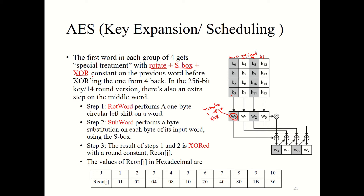In the first round you XOR with 1, in the second round with 2, the third round with 4, until the tenth round where you XOR with 36, and in the ninth round you XOR with 1B. These numbers are not decimal — they are hexadecimal numbers.